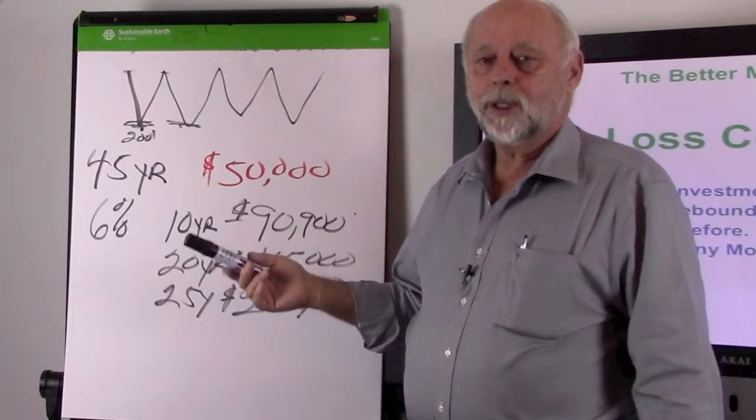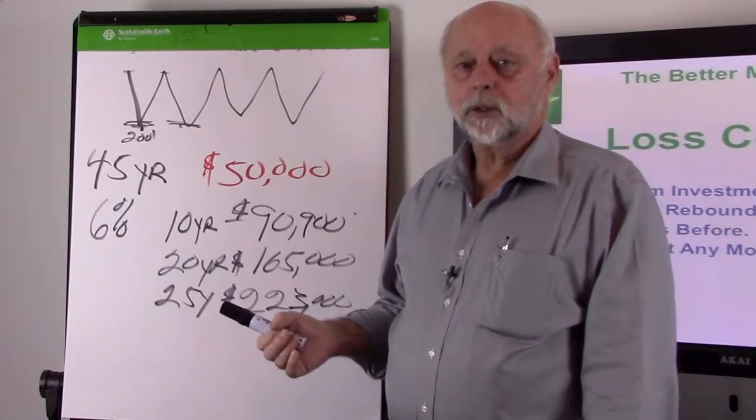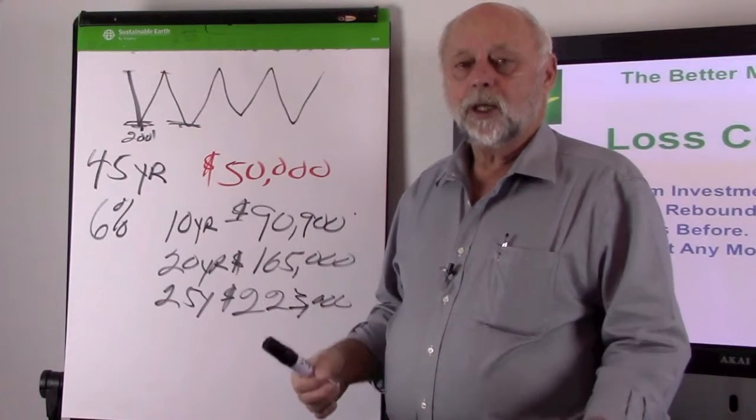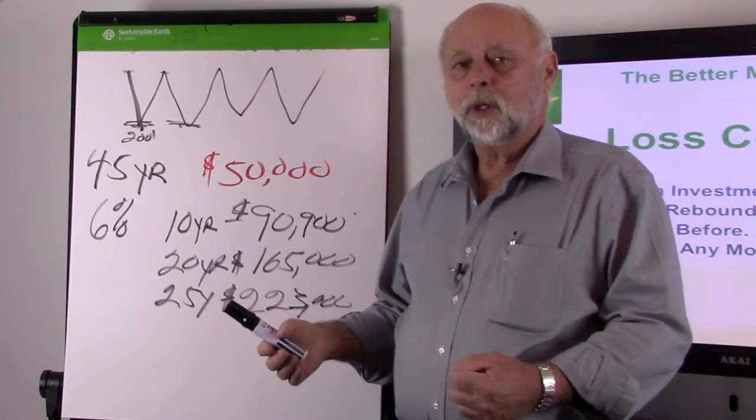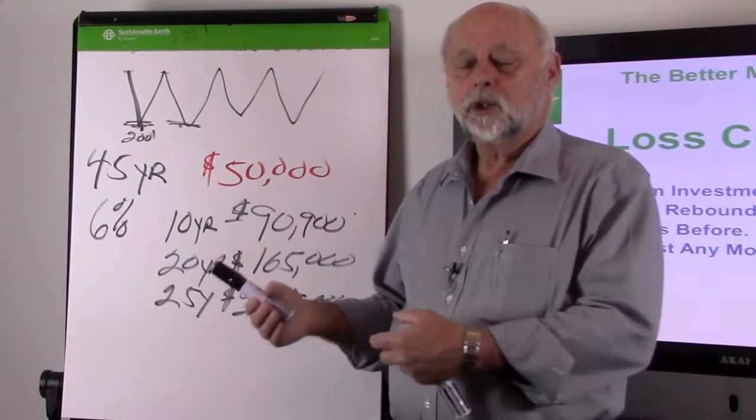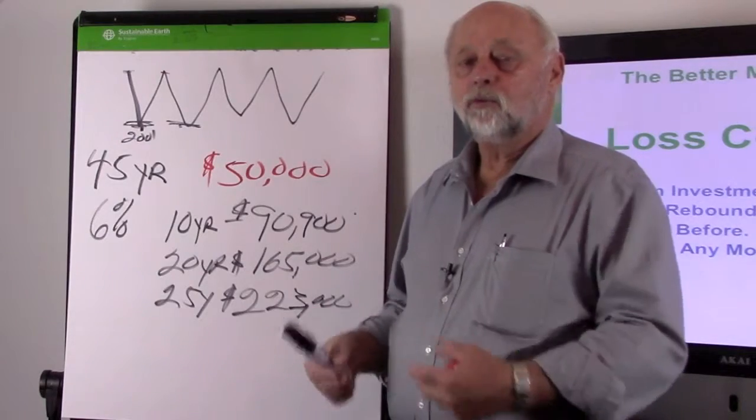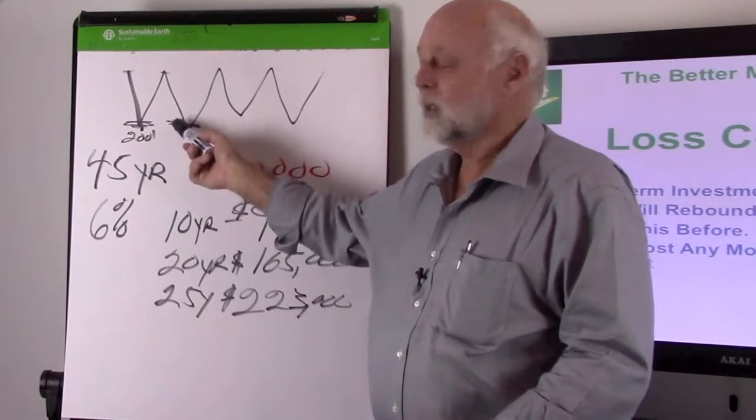Right now, the average balance in a 401k is about $93,000. In 2011, it was about $60,000. So, everybody's happy. I would say, you should separate that money now, before you lose it again. Before you go down here again.